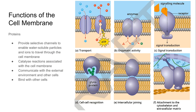Some of the functions of the cell membrane: the first is the function of the proteins scattered through that cell membrane. These proteins provide selective channels which allow water-soluble particles to travel through the cell membrane. Sometimes they catalyse reactions associated with the cell membrane. They also allow for communication with the external environment and other cells, and some proteins allow one cell to bind with other cells.